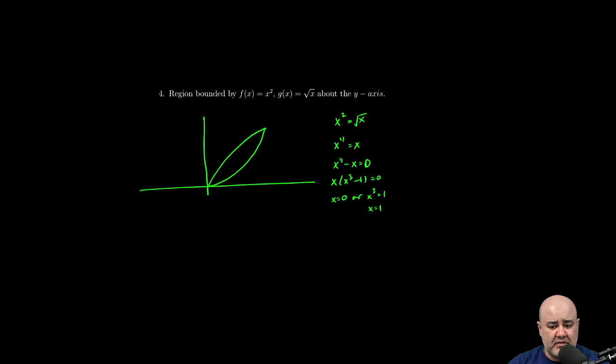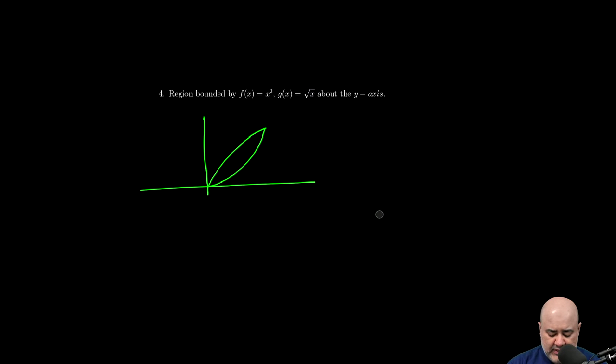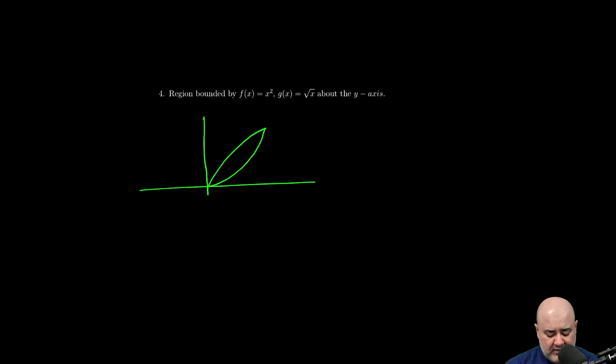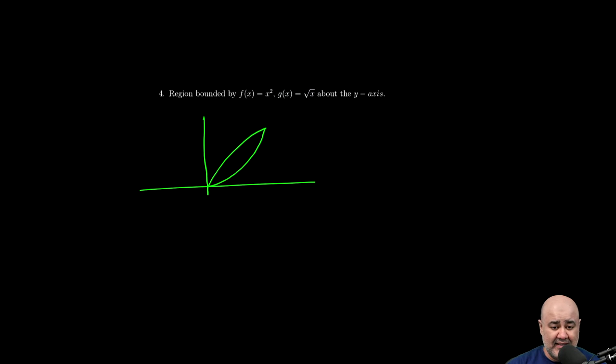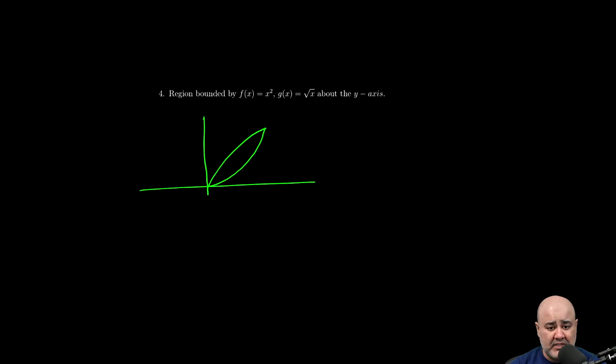So you can figure out the points of intersection of those two curves by doing it algebraically. I think it's more intuitive to just look at the equations themselves and see where would they most likely intersect. So in this case, they both run through the origin. So zero comma zero is certainly a point of intersection.